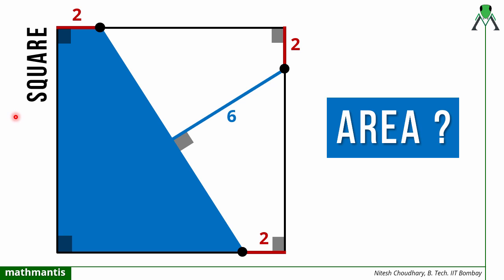Hello everyone, welcome back to my channel Mathematics. In this question we have been given a square, and on the sides of the square there are three important points defined at a distance of two units from the vertices. Joining two of these points defines a line and a blue region. We have to find its area, given that the length of the perpendicular from the third point on this line is six units.